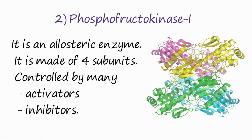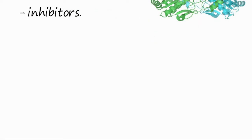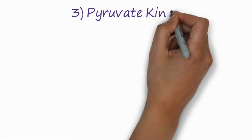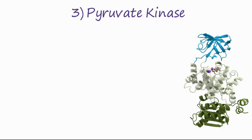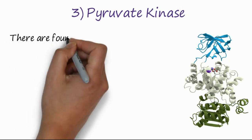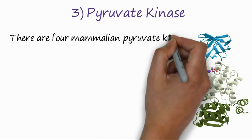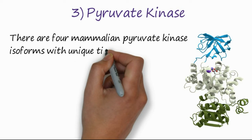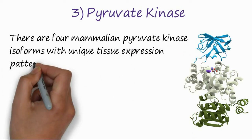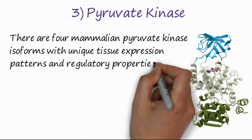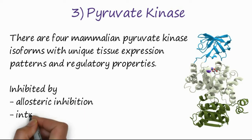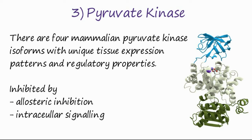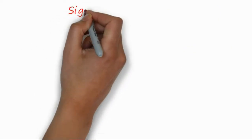The last and most important enzyme is pyruvate kinase. This is the enzyme which converts phosphoenolpyruvate to pyruvate. The enzyme is very important; there are four mammalian pyruvate kinase isoforms with unique tissue expression patterns and regulatory properties. This enzyme is inhibited by allosteric inhibition and intracellular signaling. So these three enzymes are those which control glycolysis.